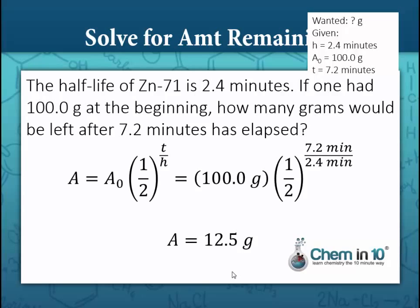This makes sense when you consider that 7.2 minutes is 2.4 minutes times 3, so three half-lives have elapsed. After one half-life, half of the original 100.0 grams remains, or 50 grams. After the second half-life, half of the 50 grams remains, or 25 grams. And after the third half-life, half of the 25 grams remains, which equals 12.5 grams.